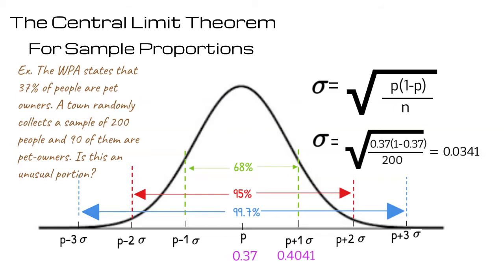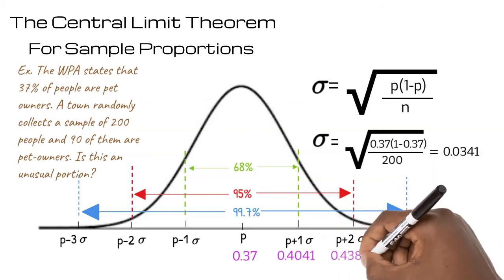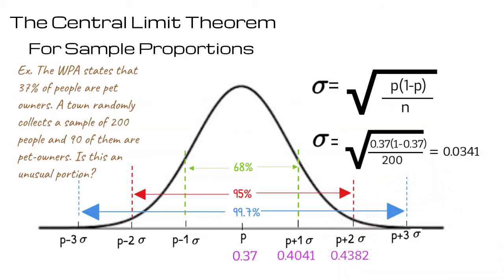We take 0.0341 from 0.37 to get 0.3359. We take the standard deviation away again.